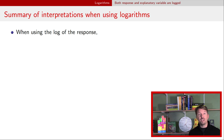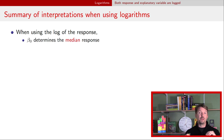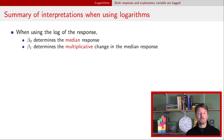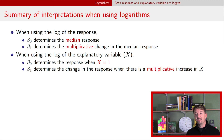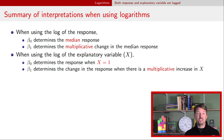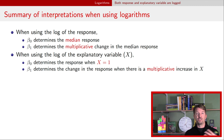As a summary: when using the log of the response, beta naught describes the median of that response and beta one describes a multiplicative change in that median. When using the log of the explanatory variable, beta naught determines the response when the explanatory variable is one, and beta one determines the change in response for a multiplicative change in the explanatory variable. The next video will use a real data example going through diagnostic plots to choose an appropriate log transformation.